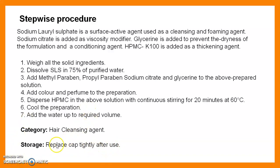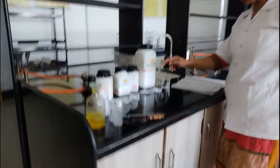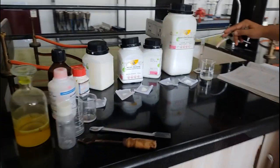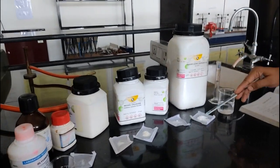Welcome, dear students, to the laboratory session. In this session we see how to prepare the clear shampoo — today we prepare 10 ml. The formula is prescribed for 100 ml but we prepare only 10 ml. The chemicals required are: sodium lauryl sulfate, 1 gram (already measured).